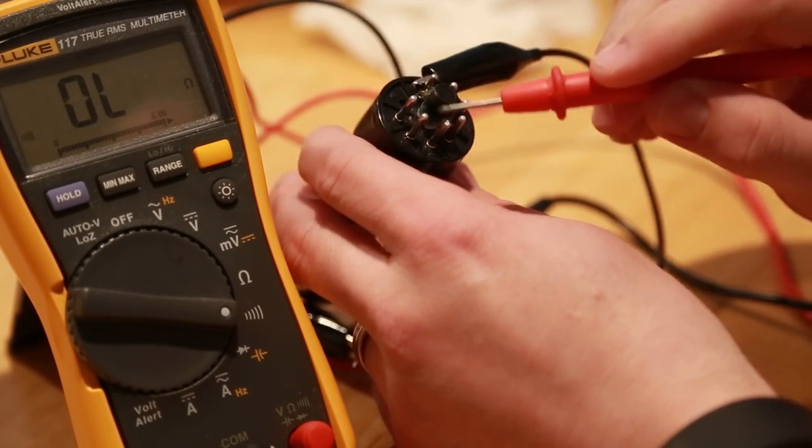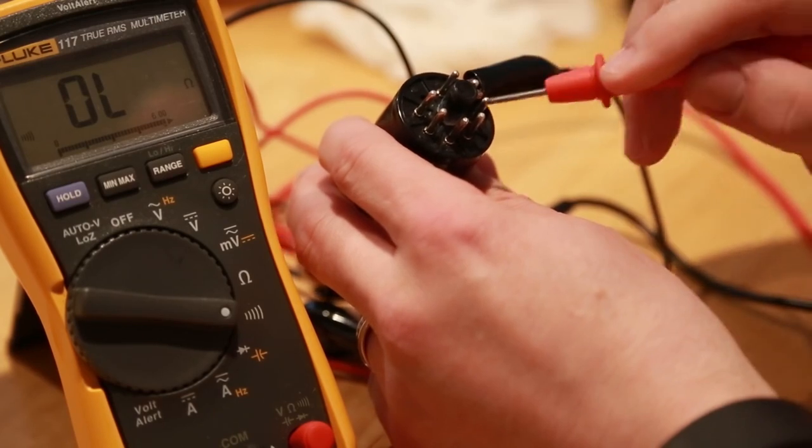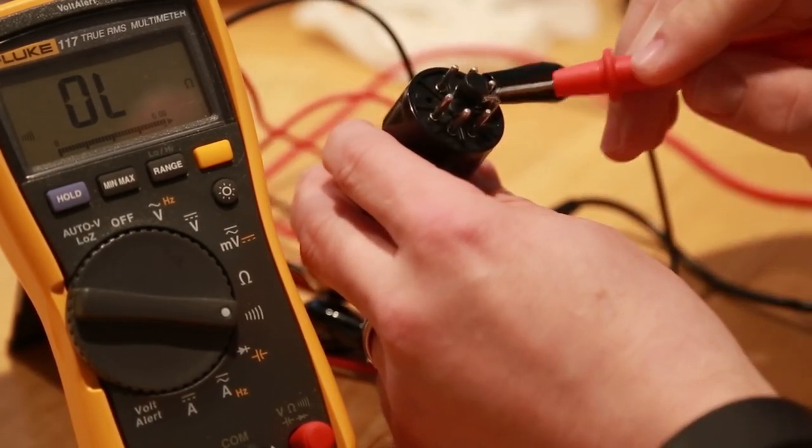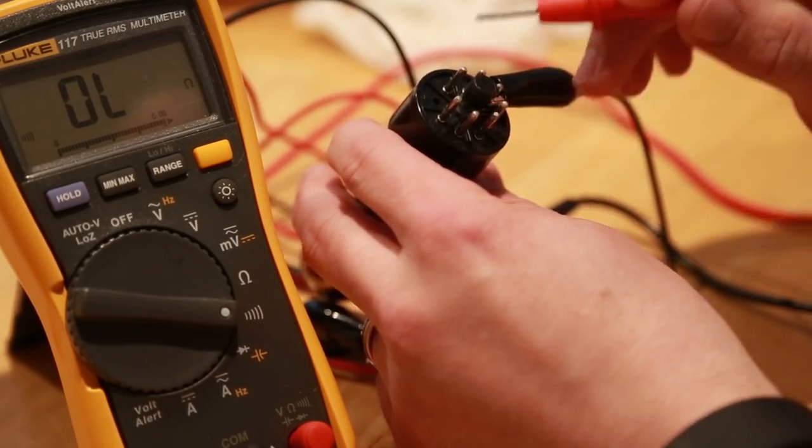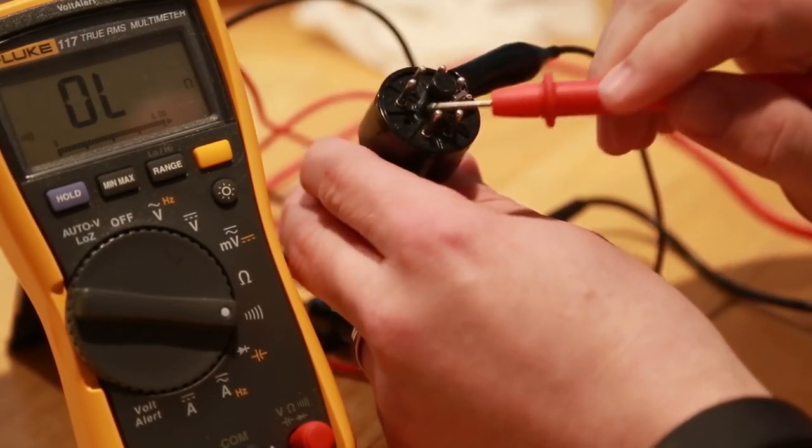You should also test all of the other pins because I should not have continuity on those. Then you can go through a daisy chaining process of testing all of the pins to make sure no other continuity happens except on those that are supposed to, like the heater pins.